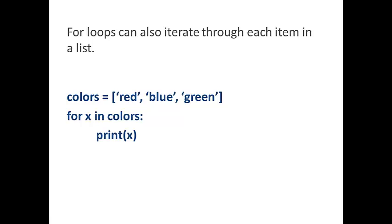This example assigns the values red, blue, and green to the list colors. For x in colors, print x. So it's going to iterate through the list three times. Each time it's going to print one color. So the output you get is red, blue, green.